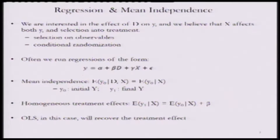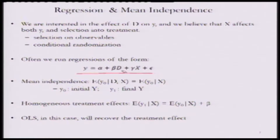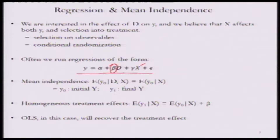Typically in a regression model, consider this model where y is a function of d. Let us say that d is our variable of interest. Typically in this sort of a model what we are interested in is the parameter on d, beta, which essentially tells us how d affects y. And x here are basically other exogenous covariates that go into the model.